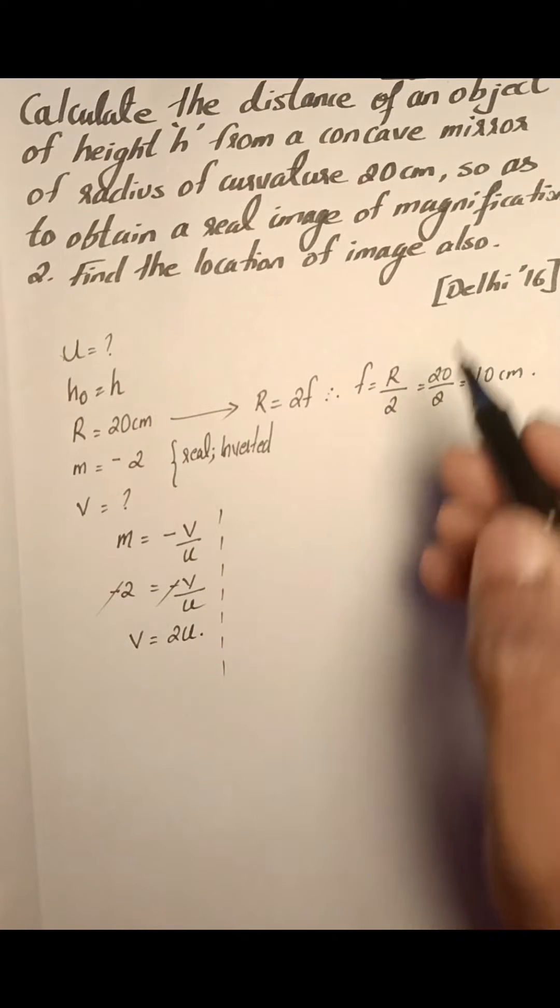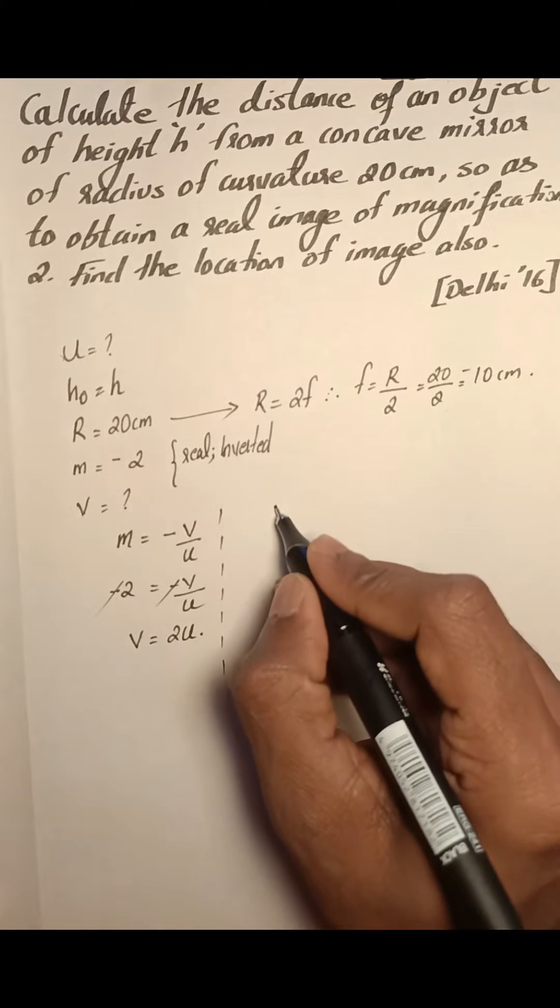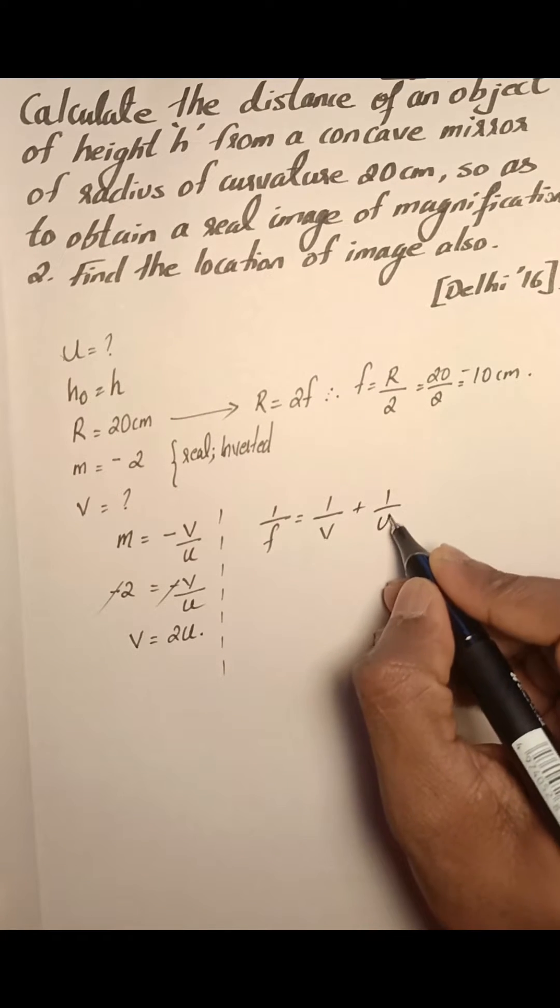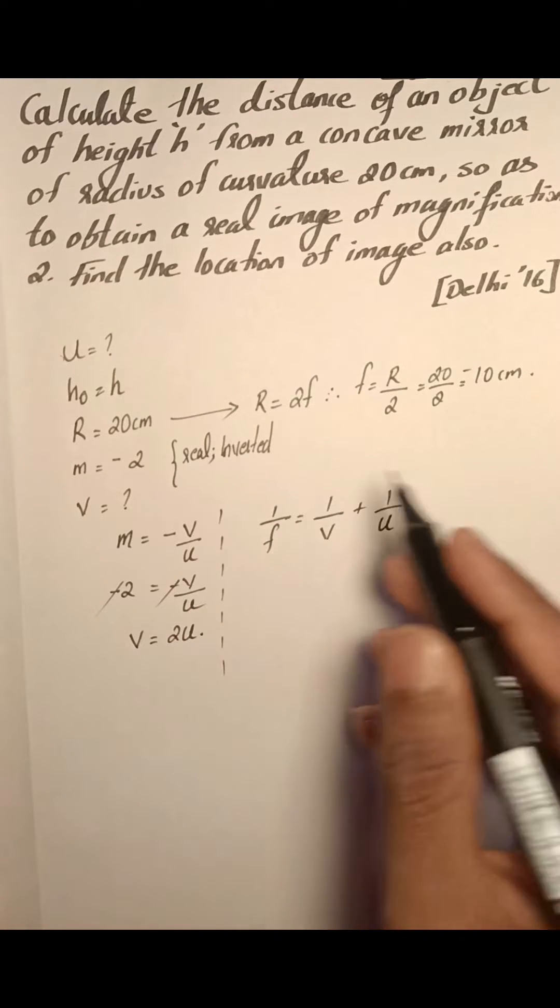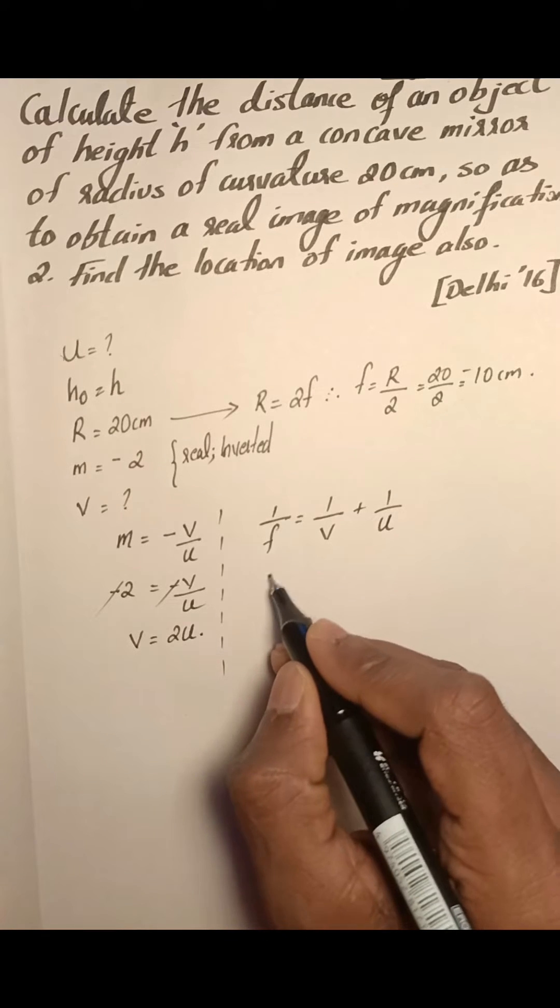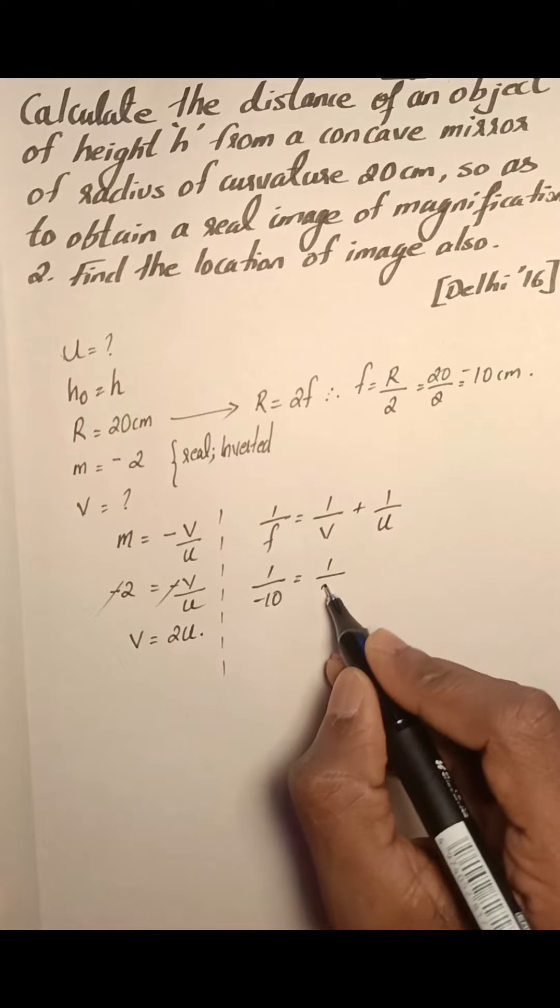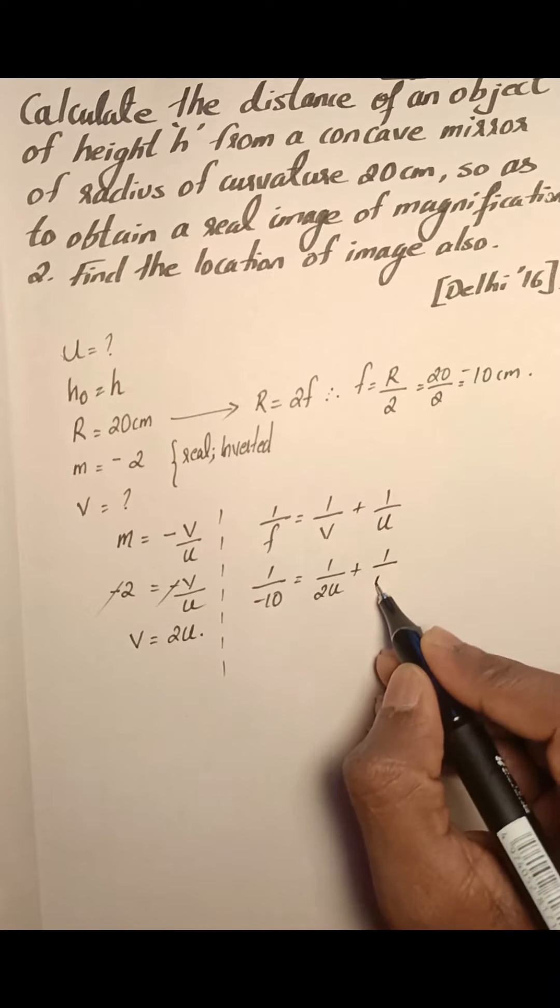Now we have focus, so we will use the mirror equation. 1 by f equals 1 by v plus 1 by u. We will substitute these values. The value of f is minus 10, so 1 by minus 10 equals the value of v is 2u. 1 by 2u plus 1 by u.